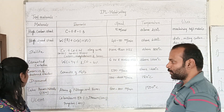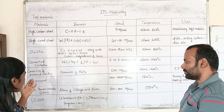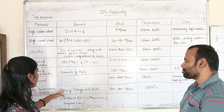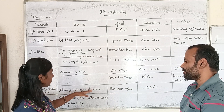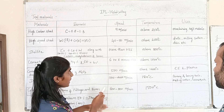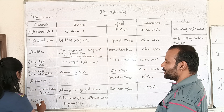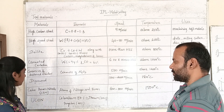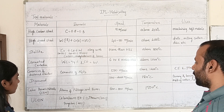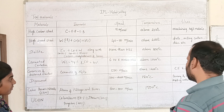Cubic boron nitride, or CBN, is the second hardest metal after diamond. It is composed of atoms of nitrogen and boron. The speed is 600 to 800 meters per minute. The temperature is about 1000 degrees Celsius.